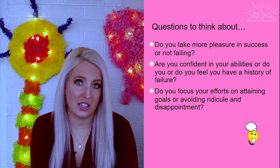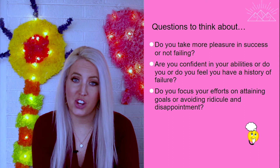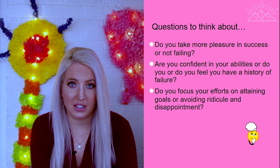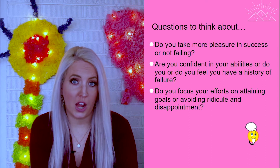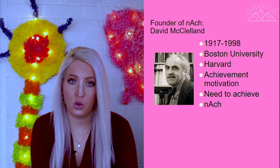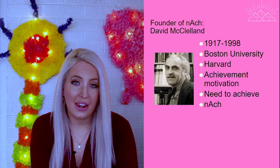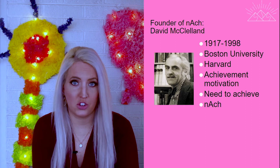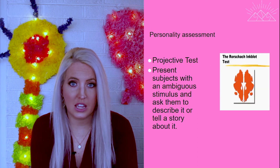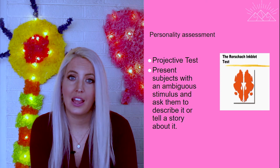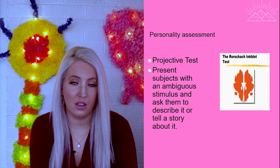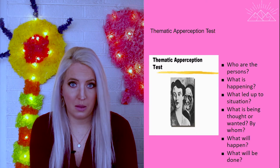McClelland's test was very similar to the projective tests we've seen before from our personality unit — like the Rorschach inkblot test, which was an ambiguous test meant to project or reveal something about how we are really feeling or thinking. The Thematic Apperception Test was the one where you looked at pictures, described what you saw in the scene, told a story about it, and it was supposed to say something about you and the way you are thinking and feeling. McClelland used a very similar setup.